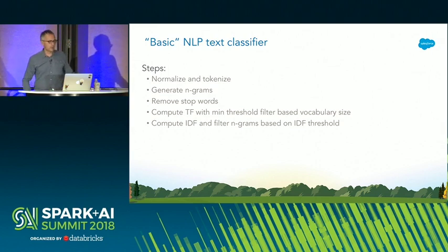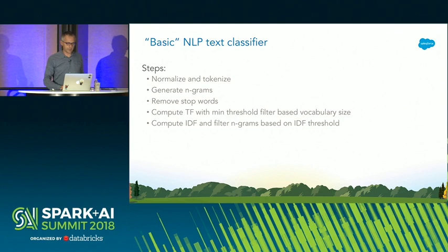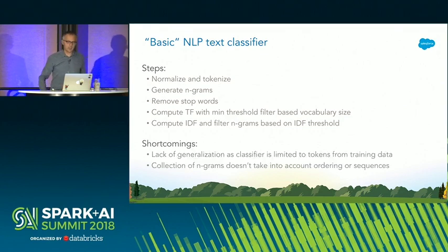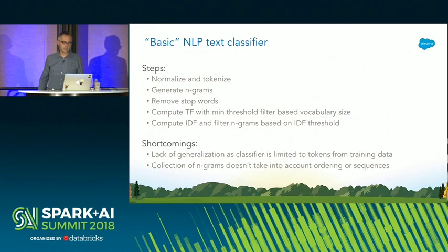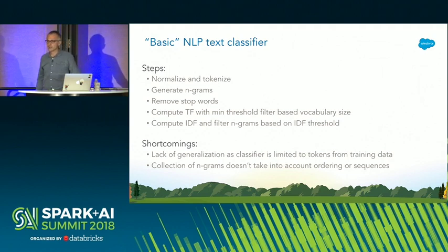This approach works; however, it has a few drawbacks. The lack of generalization, as the classifier is limited to the vocabulary from the training data — this is a problem because language is rich and there are lots of ways to express the same intent, for instance a scheduling request. Also, the collection of n-grams doesn't allow for n-gram ordering or sequences, and sequences matter in text. Scoring over a set of n-grams isn't optimal, as longer emails mean more n-grams and hence more noise.